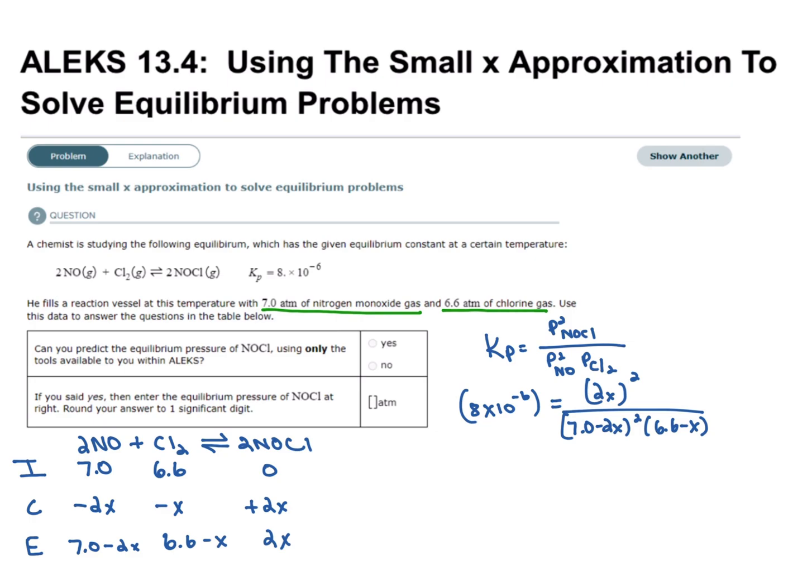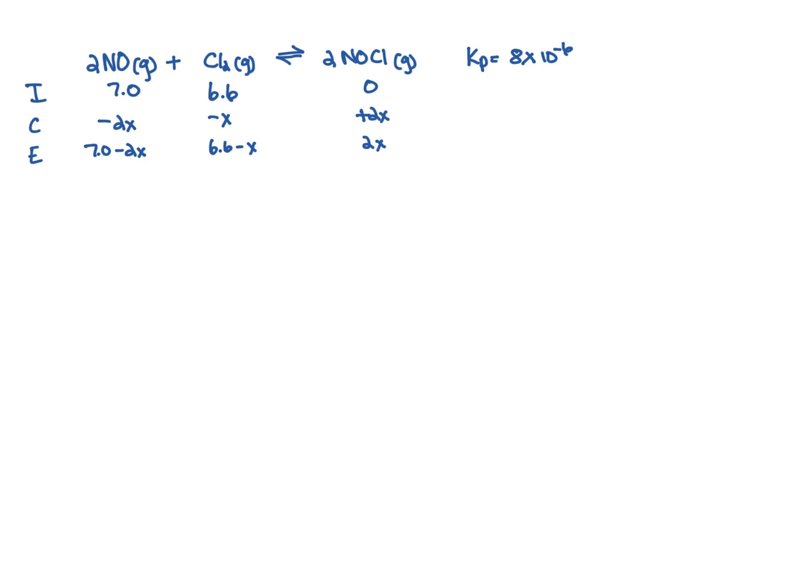When we examine this expression, we see that this is a higher-order equation, so the math becomes complicated. This is going to be a fourth-degree equation, so we're going to have to use the small x approximation. We're going to assume that x is so small that it won't make a difference in the equilibrium of our reactants. So we'll set up another ICE table and ignore the x terms in our reactants.